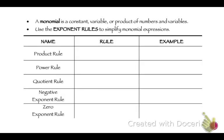So a monomial — mono means one, so this just means one term. And there are different exponent rules with monomials. You should have done this before, but let's go through them.